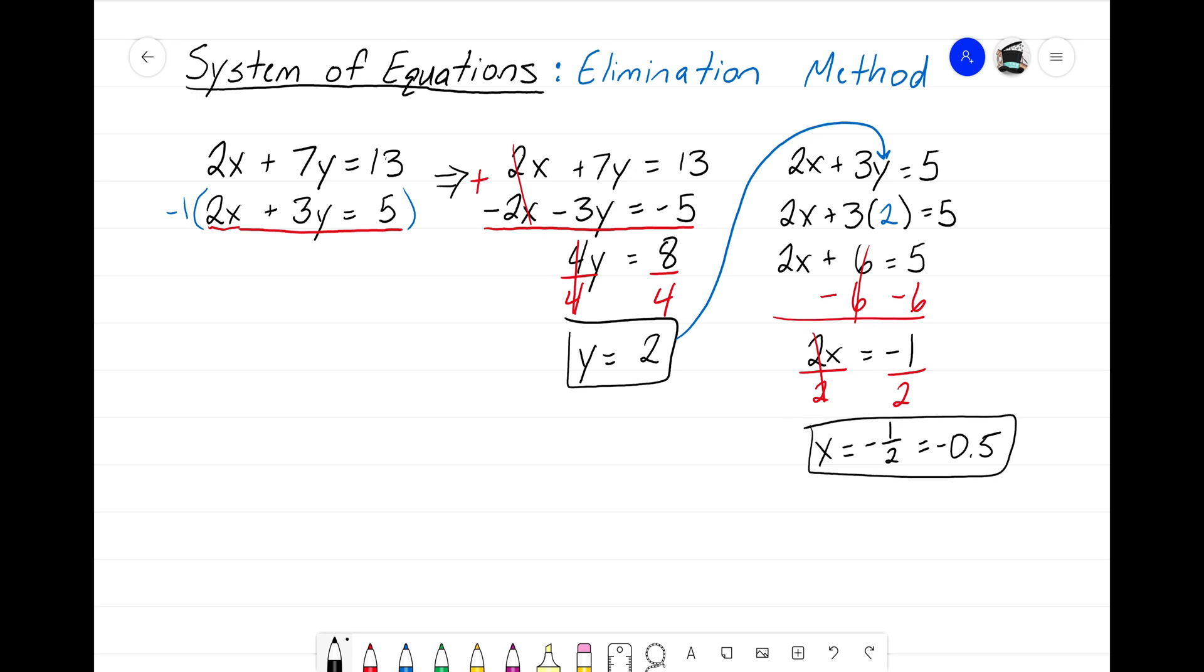So now we know that these two equations lines are going to intersect at the point negative 1 half comma 2. Or if you want to write it as a decimal, the decimal version would be negative 0.5 comma 2. That is our answer. That is where those two lines are going to intersect.